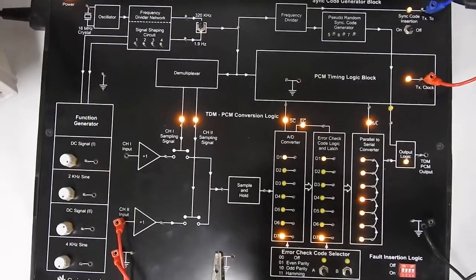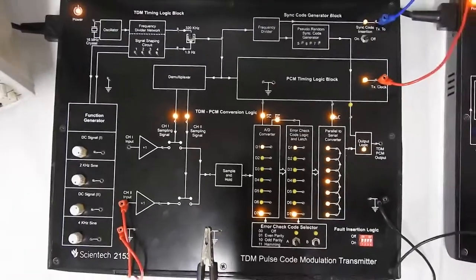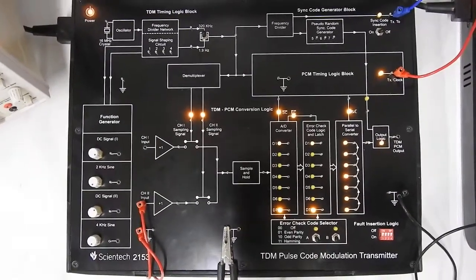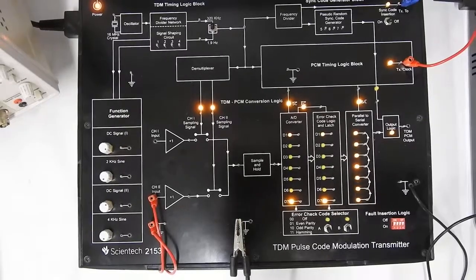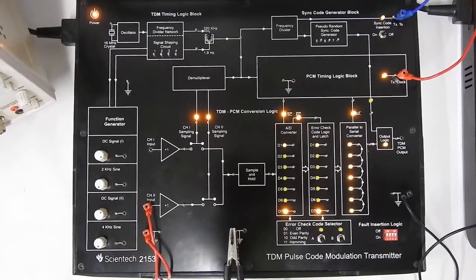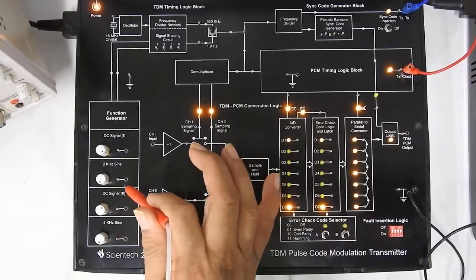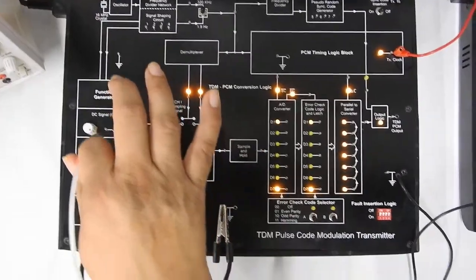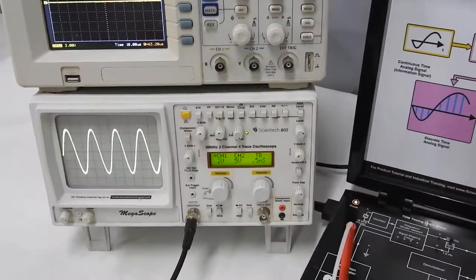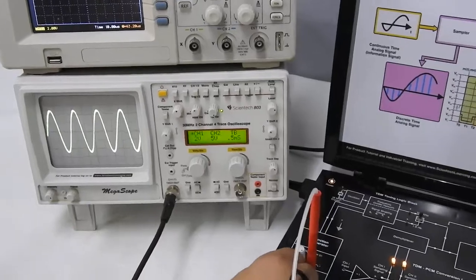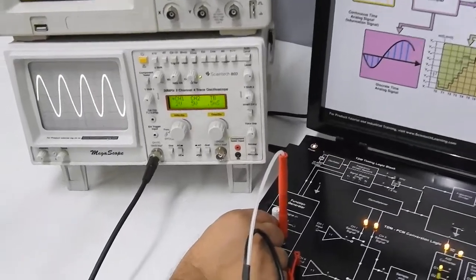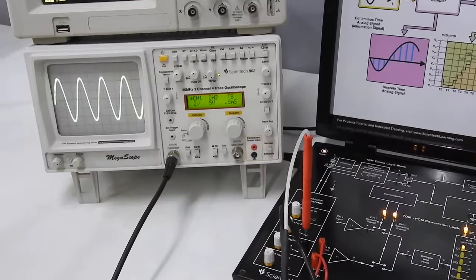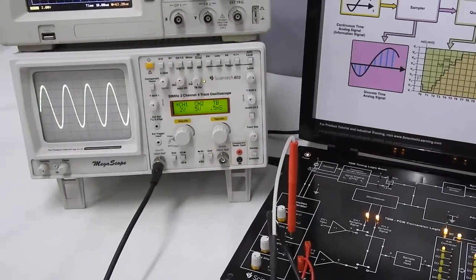Let us do some experiments to understand pulse code modulation and demodulation. The first thing required in pulse code modulation is an analog signal. Here we have a function generator giving a 1 kilohertz sine wave. We can see this 1 kilohertz sine wave, and I can change its amplitude. This is my analog signal, and I am going to encode it through a PCM technique.